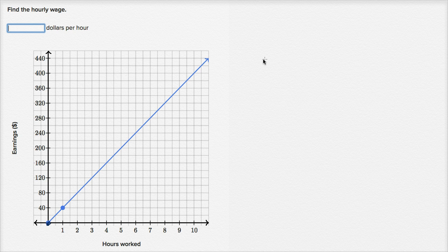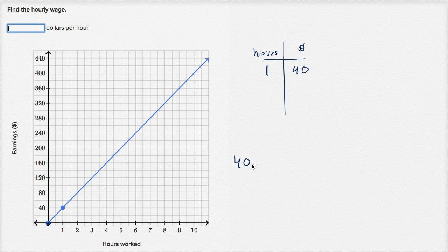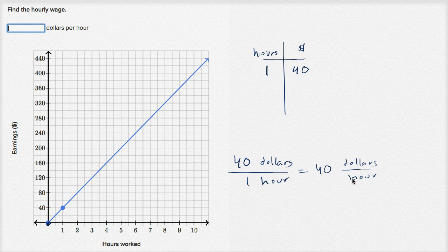There are a few ways to look at it. After one hour, we've made 40 dollars — so we're making 40 dollars per hour. Taking dollars divided by hours: 40 dollars divided by one hour is 40 dollars per hour, which is our proportionality constant. You can verify this: two hours gives 80 dollars — 80 divided by 2 is 40. Three hours gives 120 dollars — 120 divided by 3 is 40. Our proportionality constant is 40 dollars per hour.